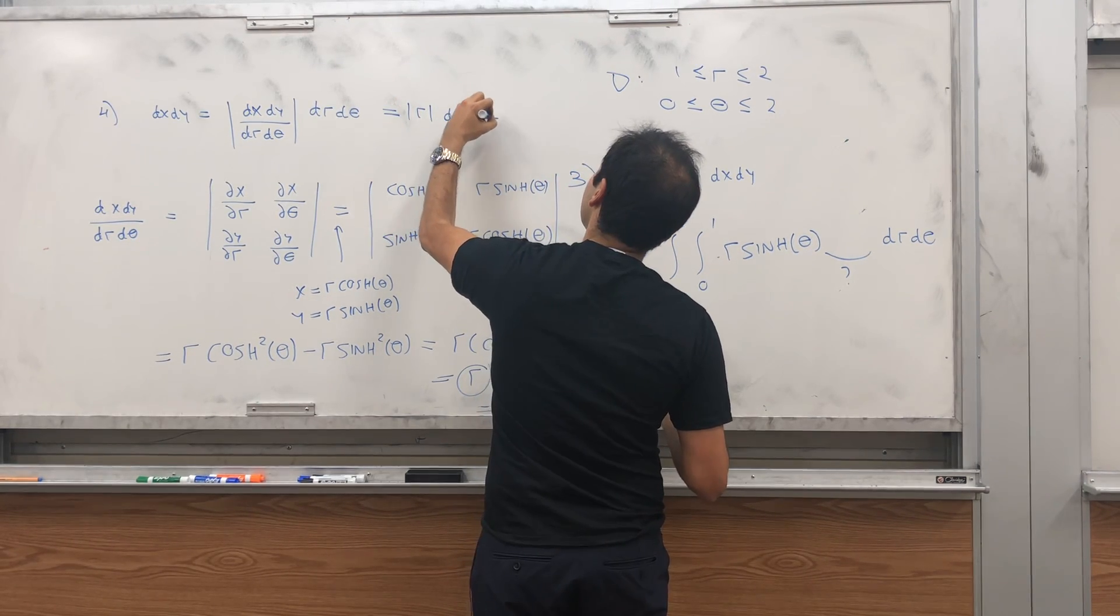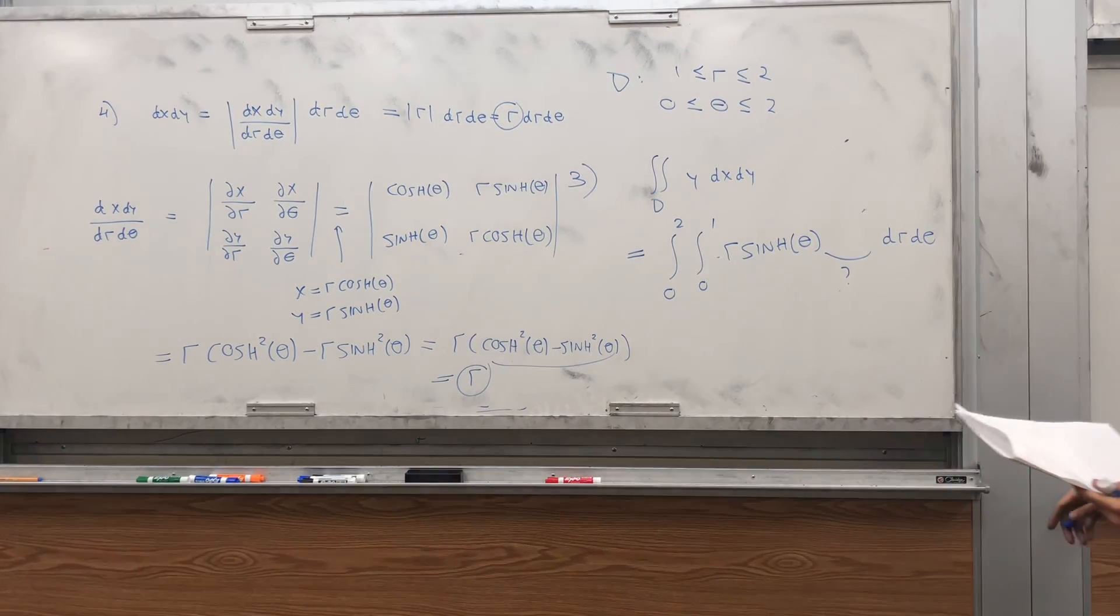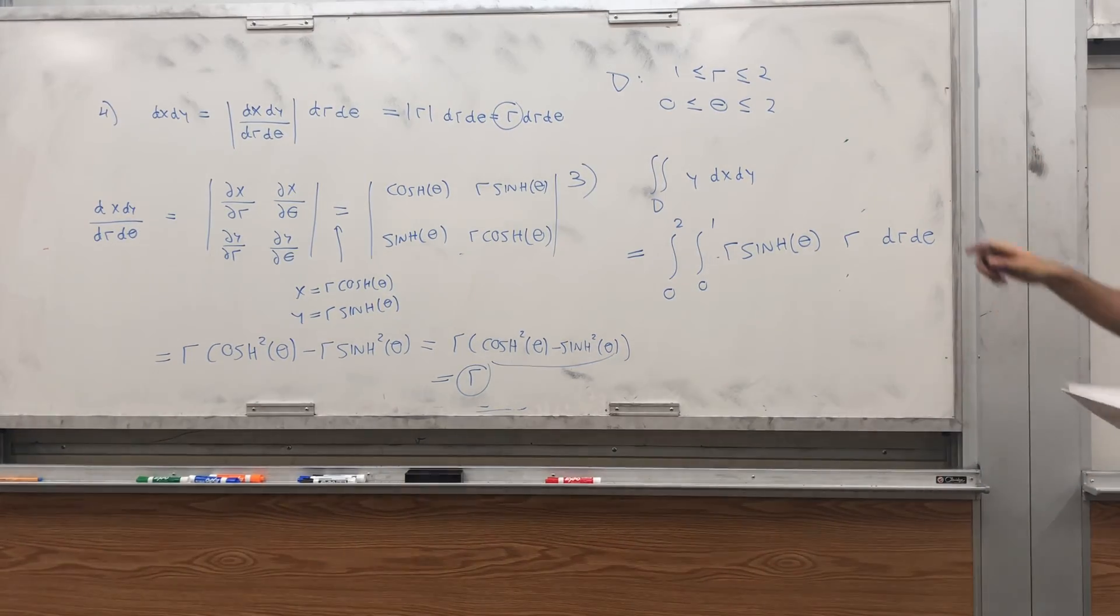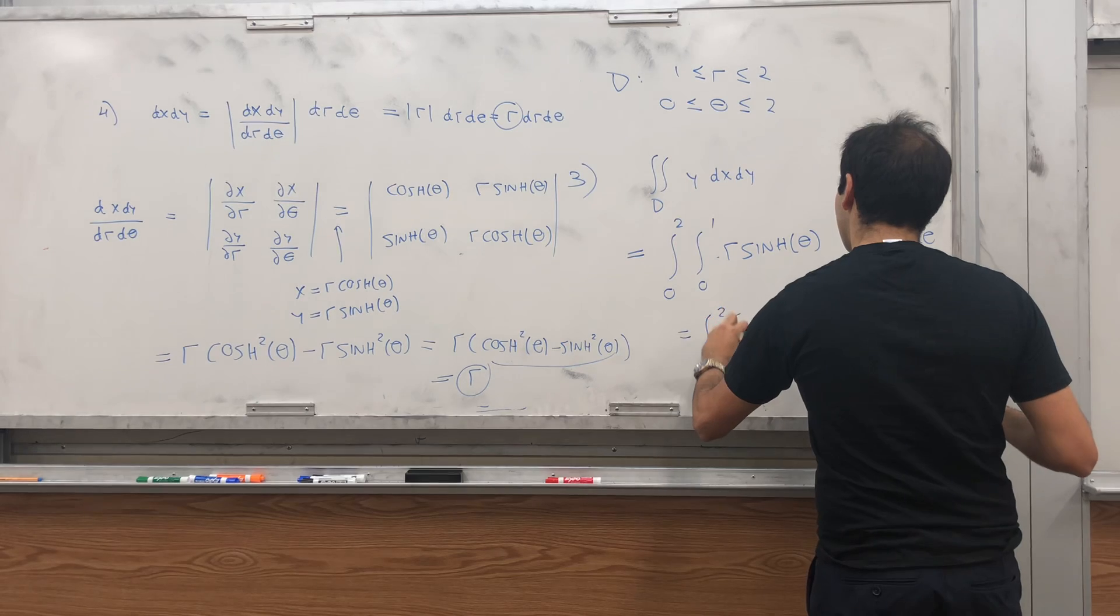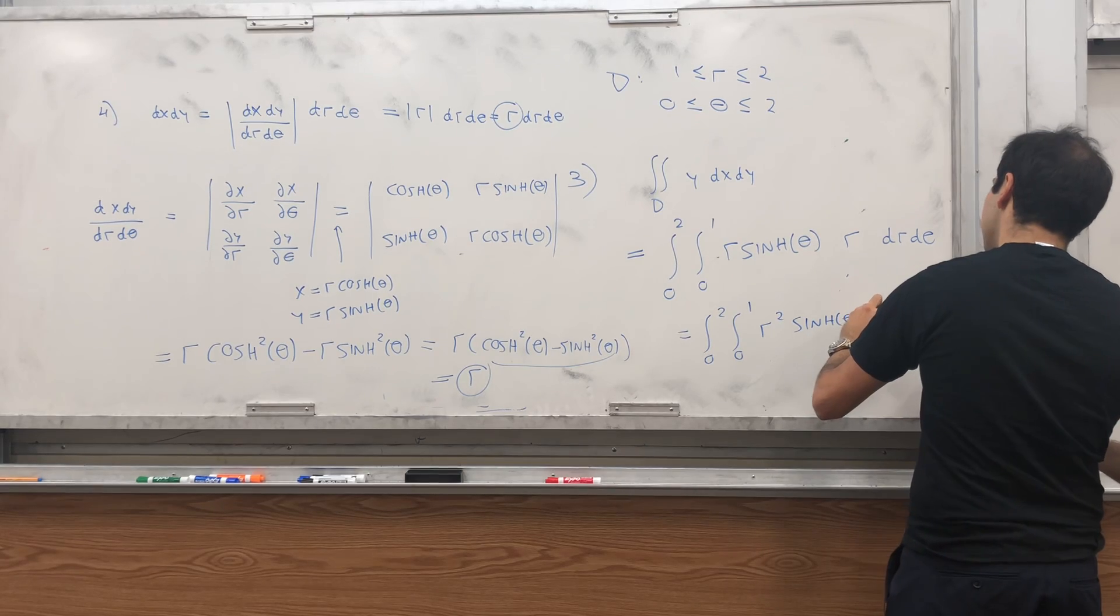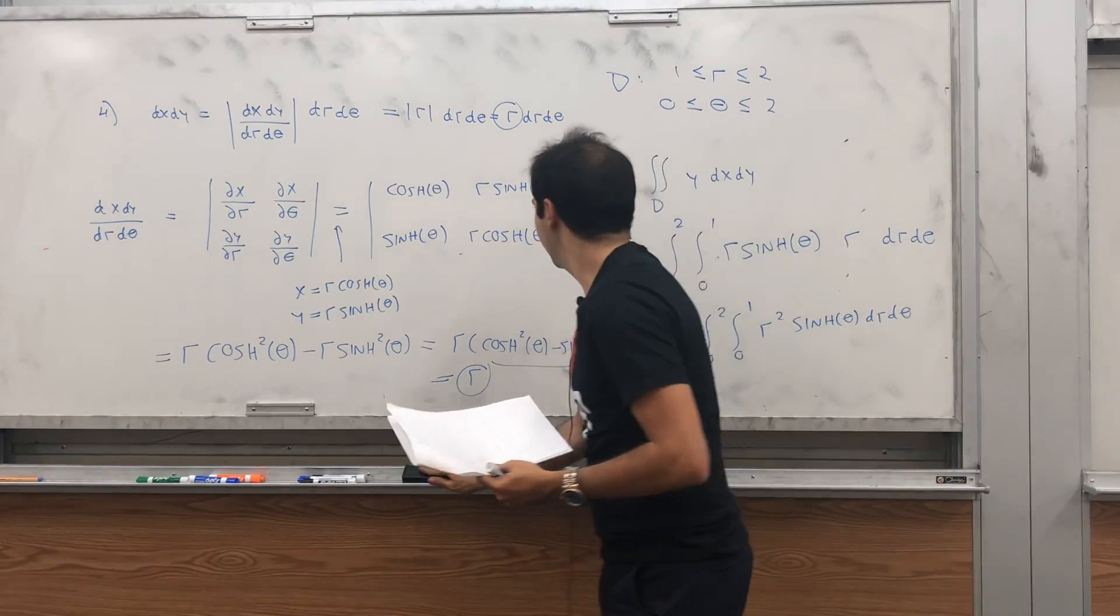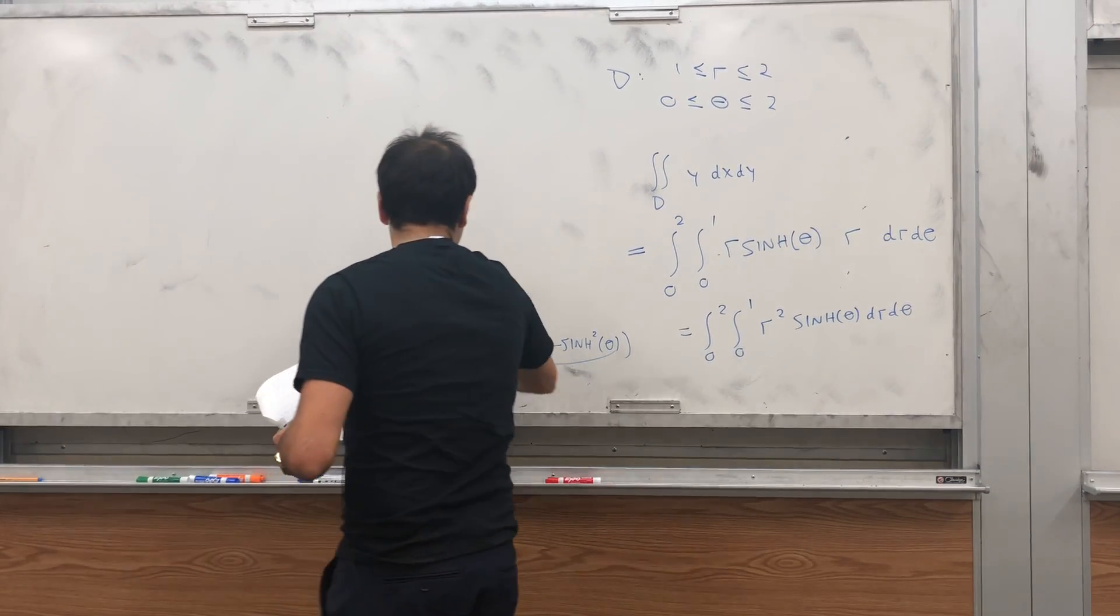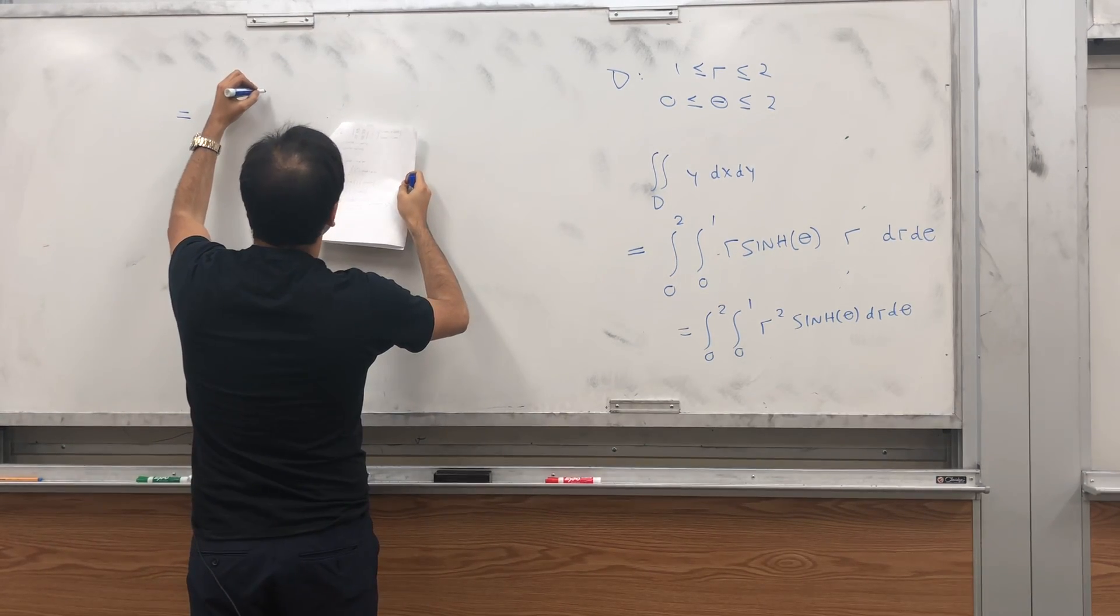Because this equals to 1. And so in particular we get absolute value of r dr d theta which becomes r dr d theta. So how cool. Just like for polar coordinates the Jacobian is r. And therefore coming back to original integral that becomes y dx dy becomes r sinh theta r dr d theta. And that becomes integral from 0 to 2 integral from 0 to 1 r squared sinh of theta dr d theta and now you can just separate them out.